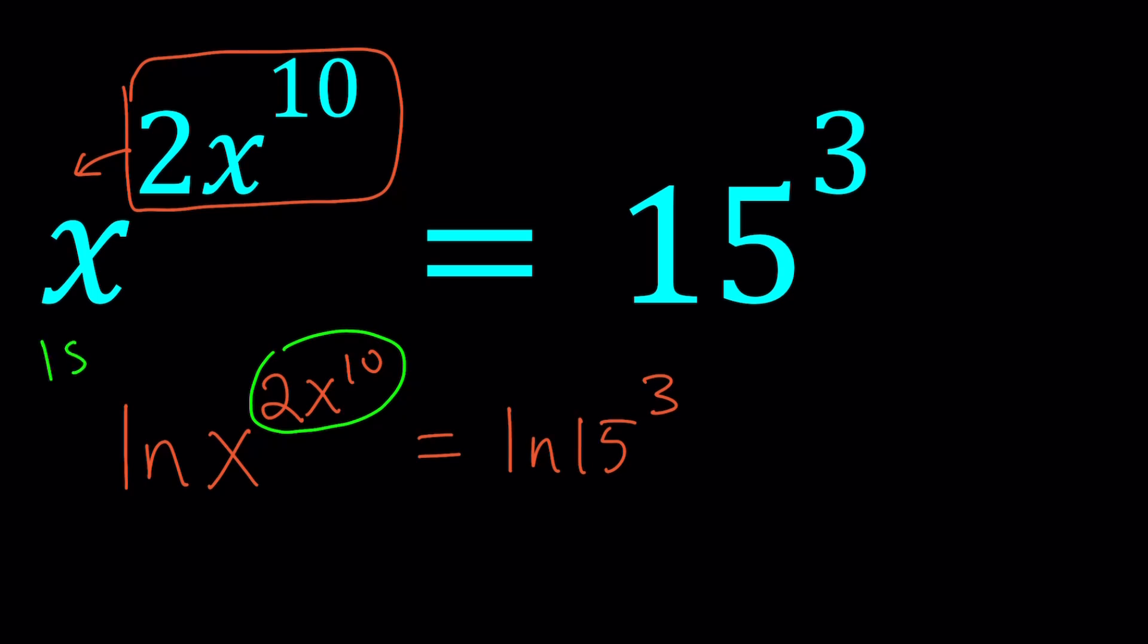The first approach, this is the first method. The first method may be incomplete, but I will definitely completely show you the second method. As soon as I log both sides, I'm able to bring this down, so this becomes 2x^10 times ln x, and then 3 times ln 15. Obviously, 3 times ln 15 is a constant, so if you want, you can call that k.